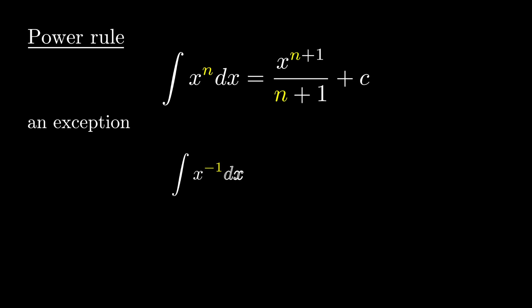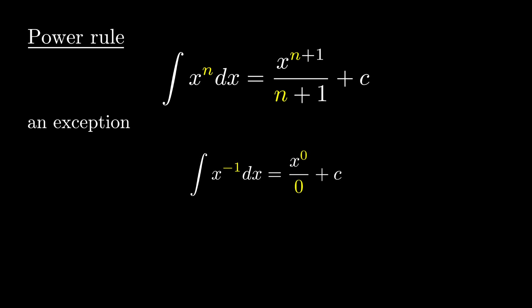Exception: integration of x^(-1) dx. Here n is replaced with -1. If we use the power rule, we get x^(-1+1) over (-1+1) plus c, and the denominator becomes 0 — it goes out of domain. So the power rule fails at n = -1; that is why we call this an exception.